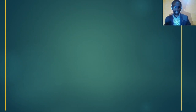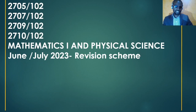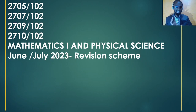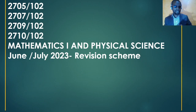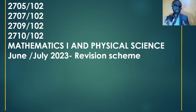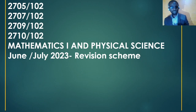We continue the revision of Mathematics 1 and Physical Science, the paper from June/July 2023. This paper contains eight questions. You are required to answer four from Section A as well as four from Section B. The first section is Mathematics 1 and the second section is Physical Science, so you can choose two from Section A as well as two from Section B, and one from either side.